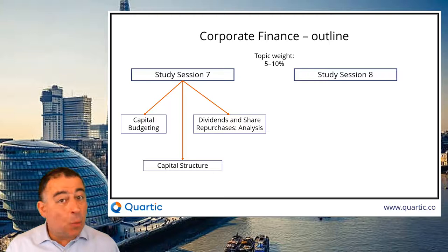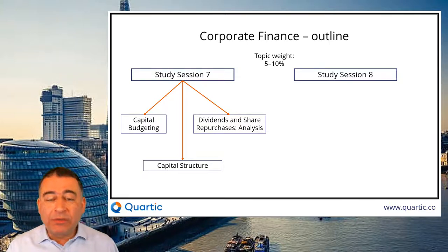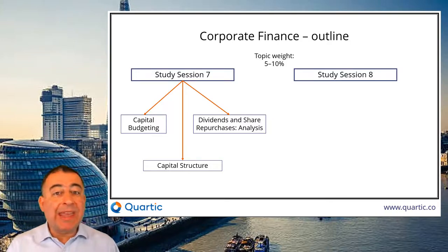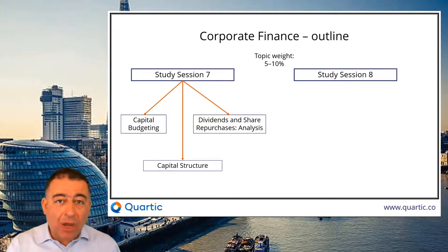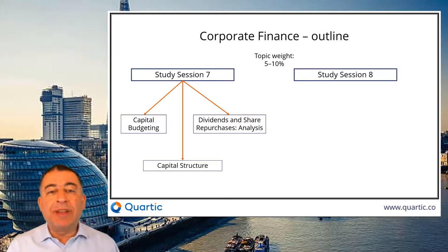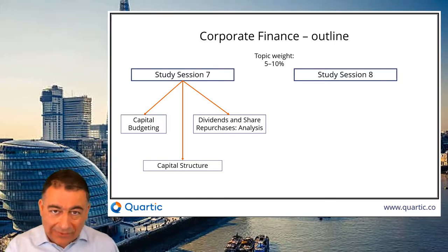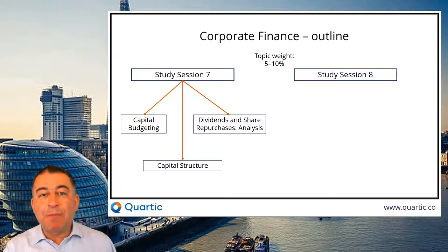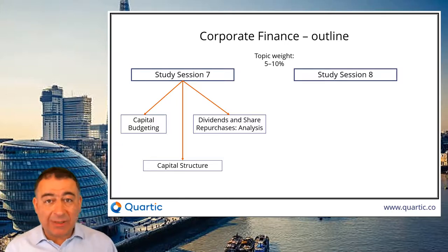Dividends and share repurchases — we started that at Level 1 as well. Now we're looking at all sorts of analysis. What do dividends do? What do share repurchases do? Let's have a look again at tax. Do we mind which a company does? Is a shareholder better off or worse off under different scenarios? And then we look at dividend policy — what sort of policies can a company put in place for dividends? How do they benefit shareholders? How do they benefit other stakeholders? And how predictable are they?